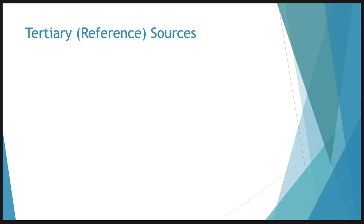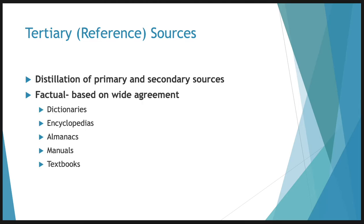Finally, tertiary or reference sources — you've probably heard these called references. These are distillations or collections of primary and secondary sources. They tend to be a collection of the agreed-upon facts, so when there's wide agreement about something and not a lot of difference of opinion about certain factual parts of the conversation, that's called a tertiary or reference source. They can include dictionaries, encyclopedias, almanacs, manuals, and most lower-level textbooks, where there's not a lot of disagreement about the basic features of a discipline, idea, or situation.